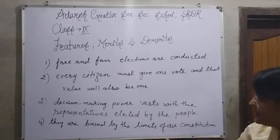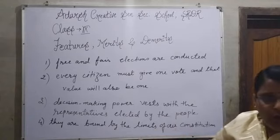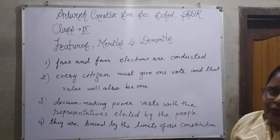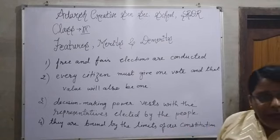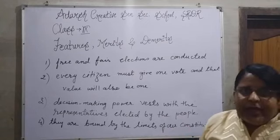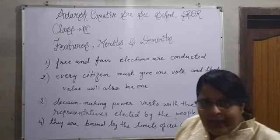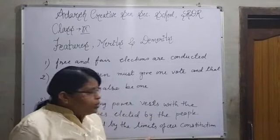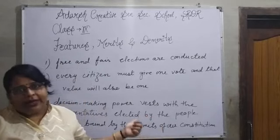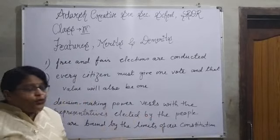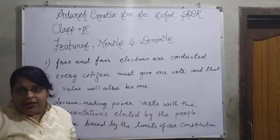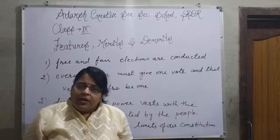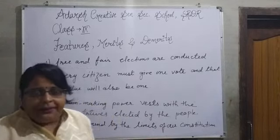The last feature is that in a democratic government, the government is bound by the limits of our constitution. They are free to take decisions, but at the same time they are bounded by the rules and regulations of the constitution and must work under its guidance.